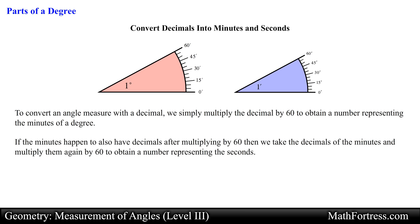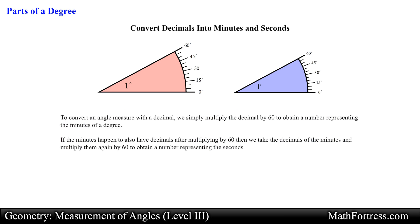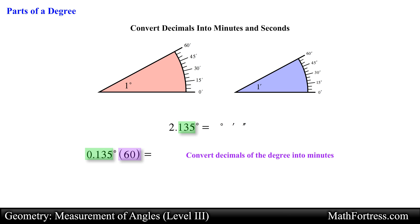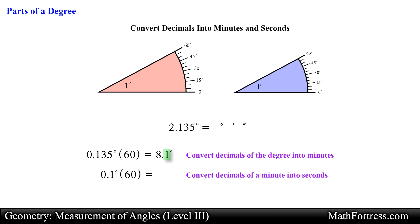If the minutes happen to also have decimals after multiplying by 60, then we take the decimal part of the minutes and multiply again by 60 to obtain a number representing the seconds. For example, the angle 2.135 degrees can be converted by taking the decimal part 0.135 and multiplying by 60, obtaining 8.1 — the number of minutes. We then take the decimal 0.1 and multiply by 60 to get 6 seconds. So 2.135 degrees can be written as 2 degrees 8 minutes 6 seconds.